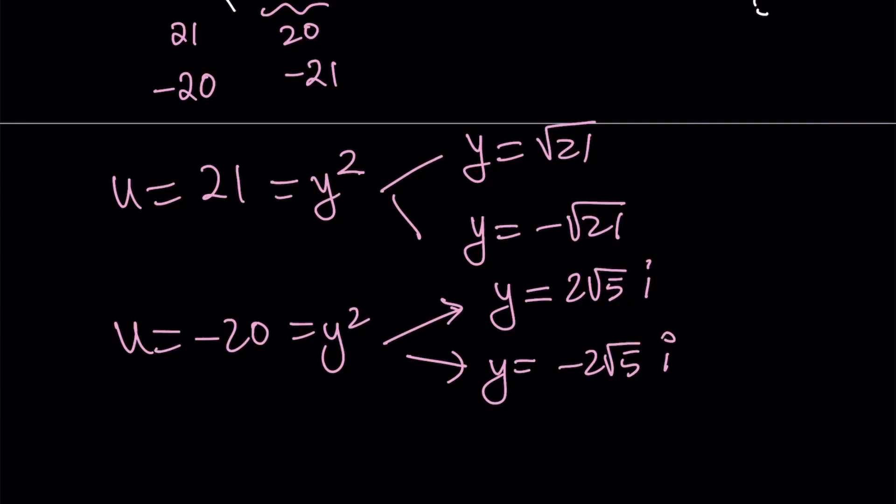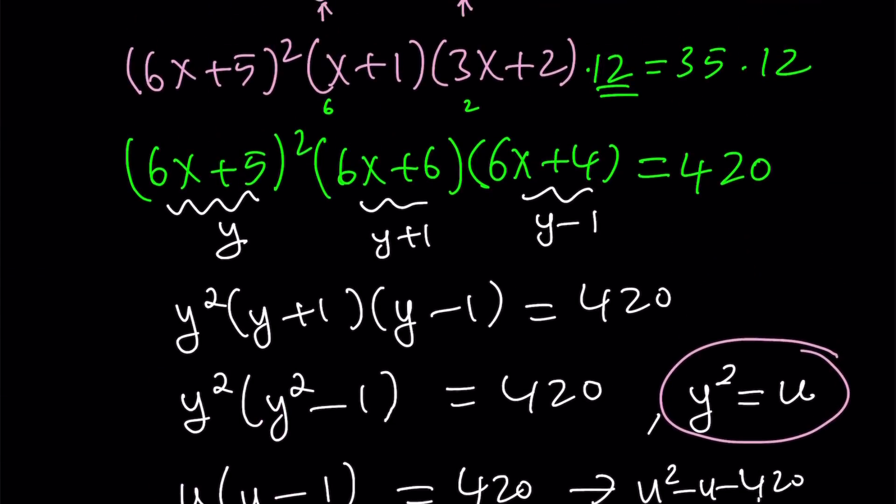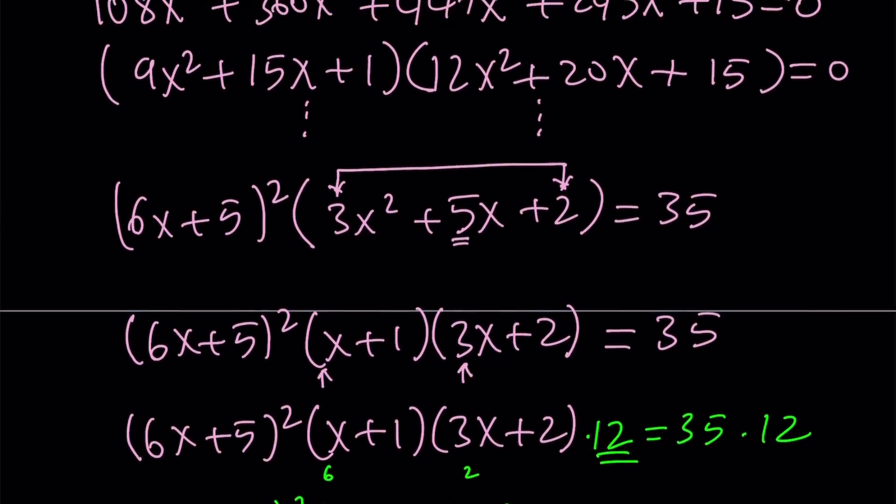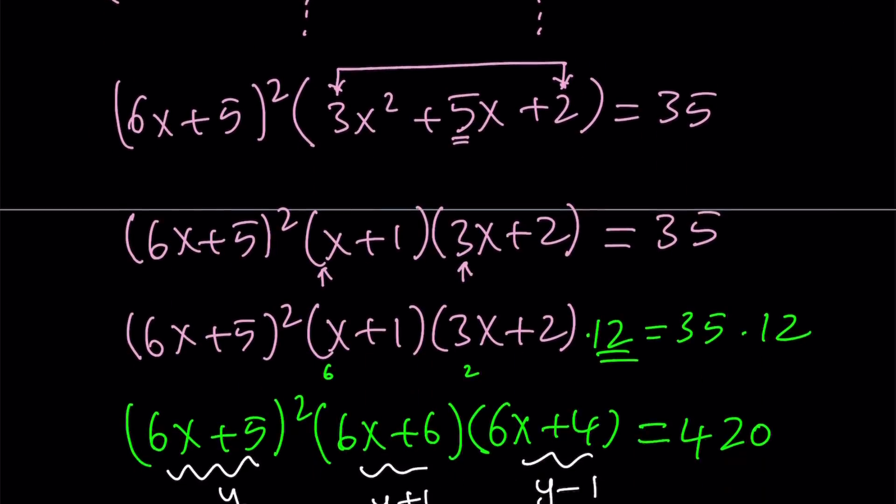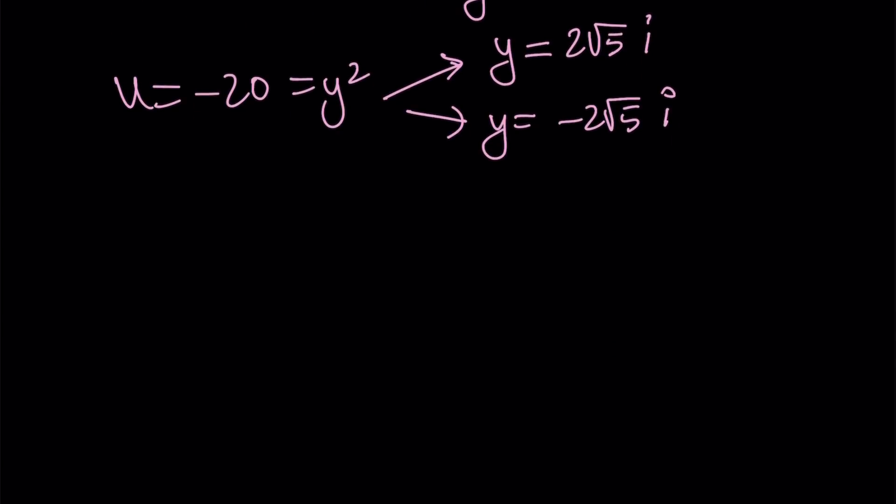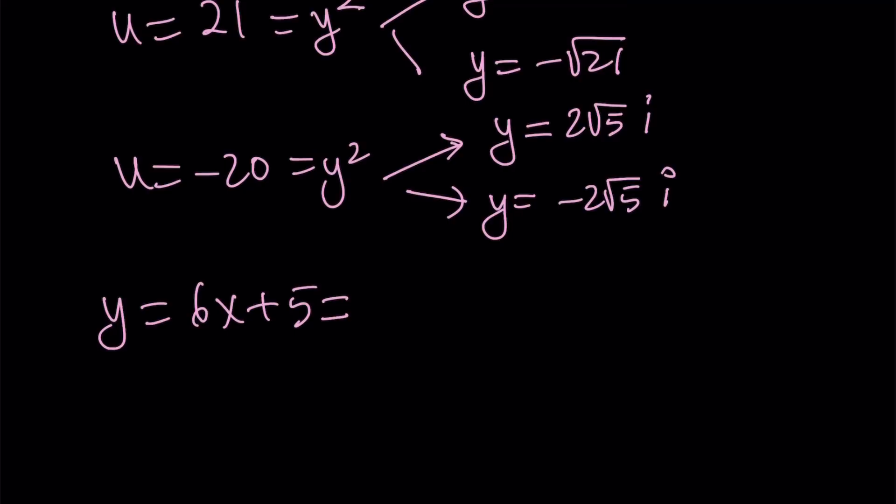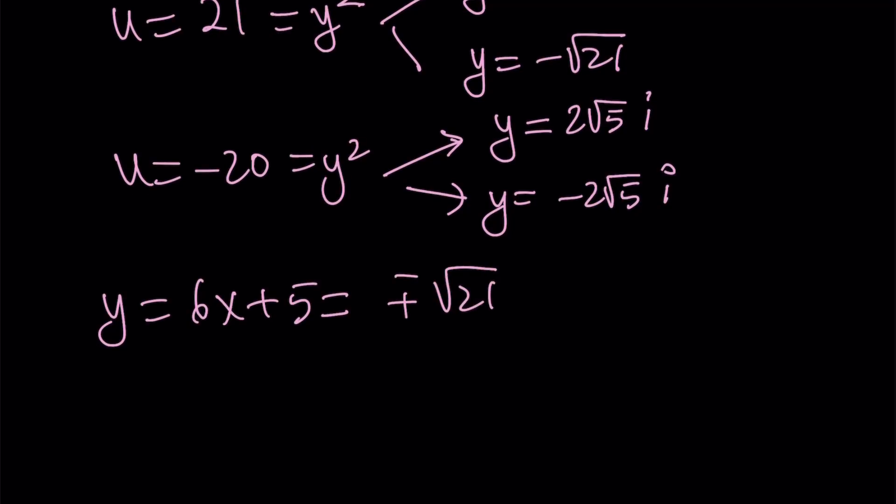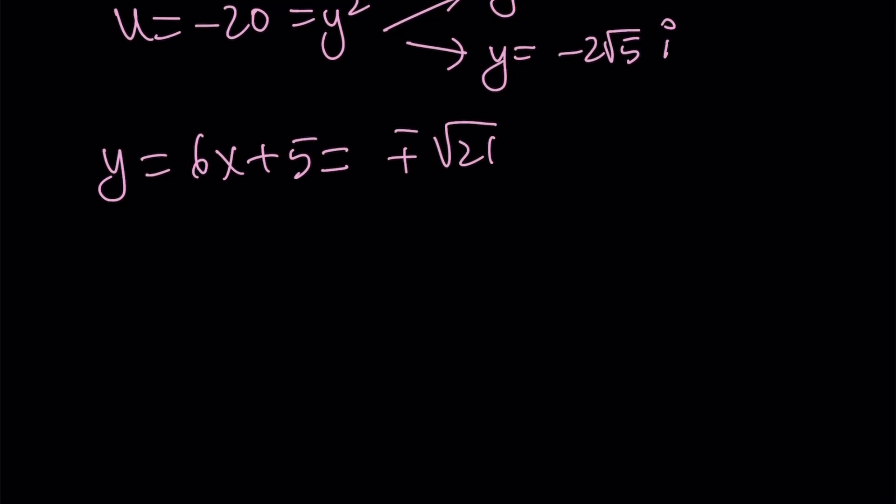But remember, these are the y values. Now, we need to find x. But what is x? x and y are related by some equation. We said that y is equal to 6x plus 5. So y is equal to 6x plus 5, but y is at the same time equal to plus minus square root of 21. Subtract 5 and divide by 6. First, subtract 5 and then divide by 6, and you're going to get the solutions.